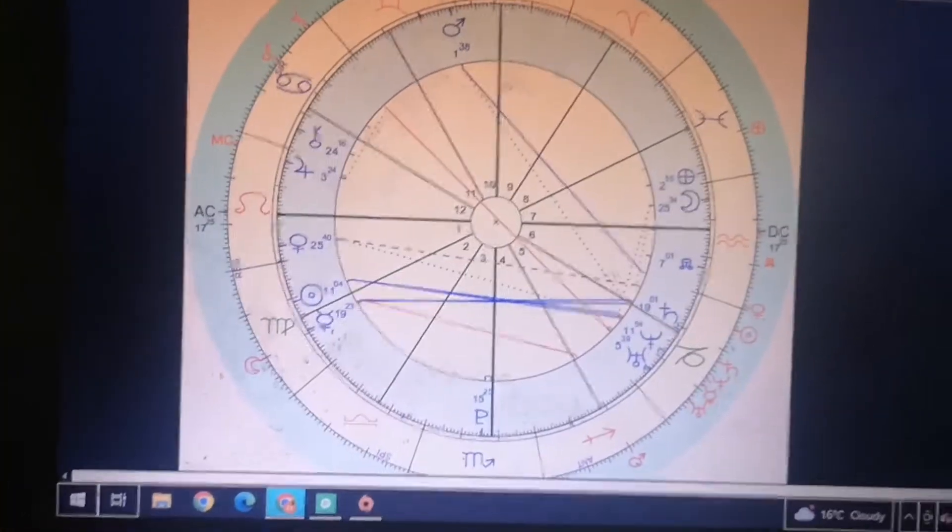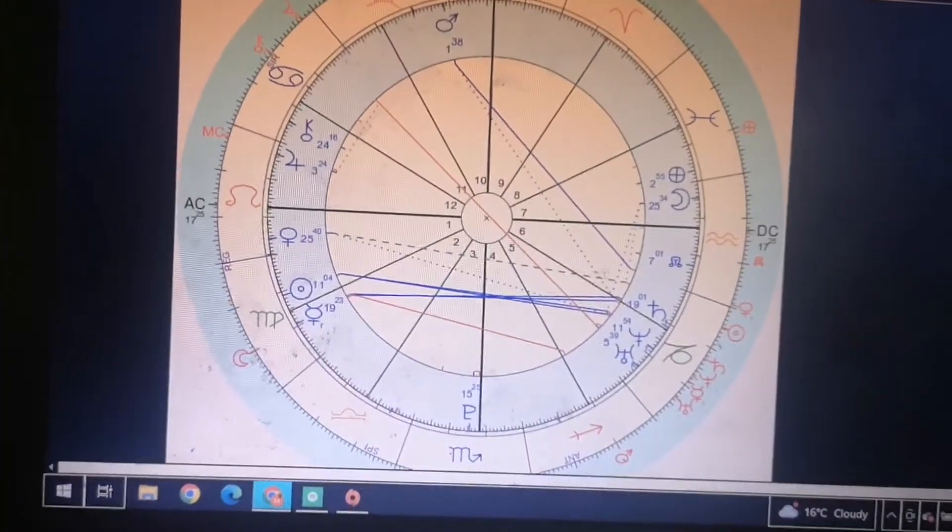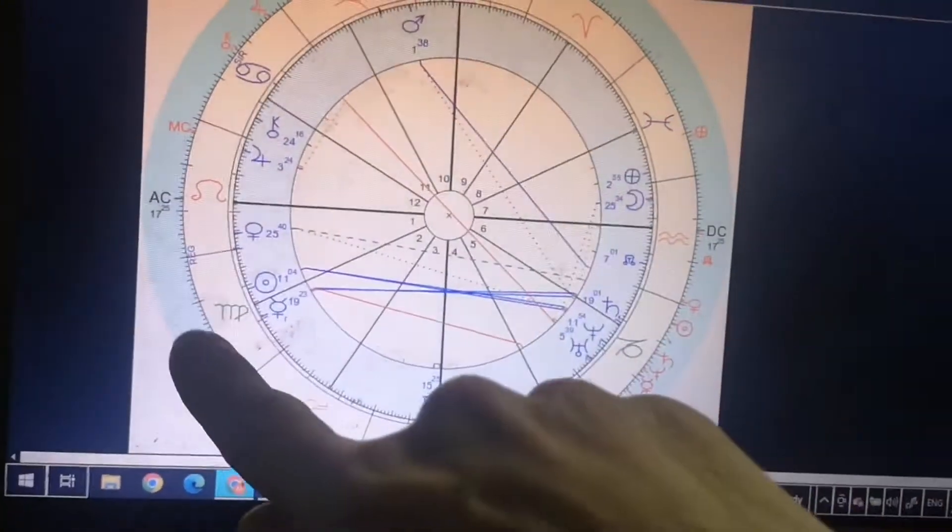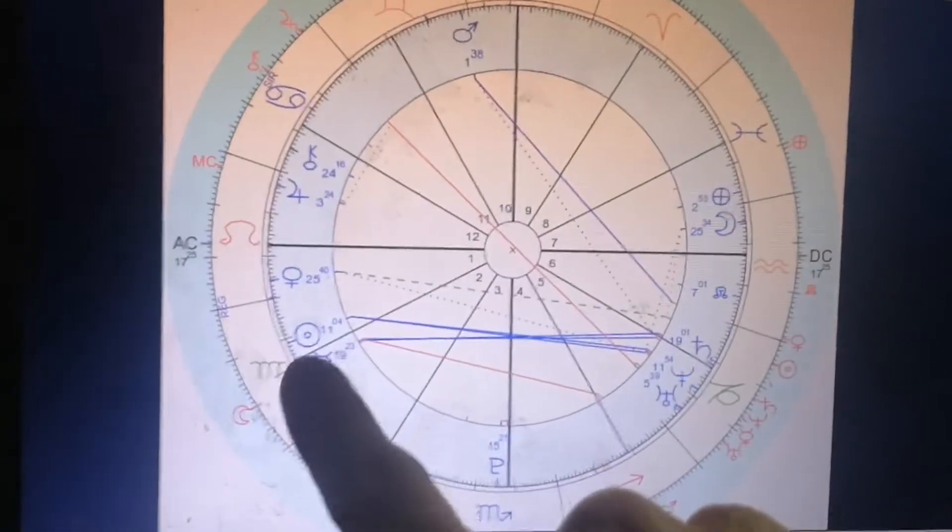And what else do we have? So you also have your Jupiter opposite to her Venus, which it's the opposition so you'd think it's bad, but it's not. It's actually one of the best things you can have with Venus and Jupiter. So look up Venus opposite Jupiter synastry.